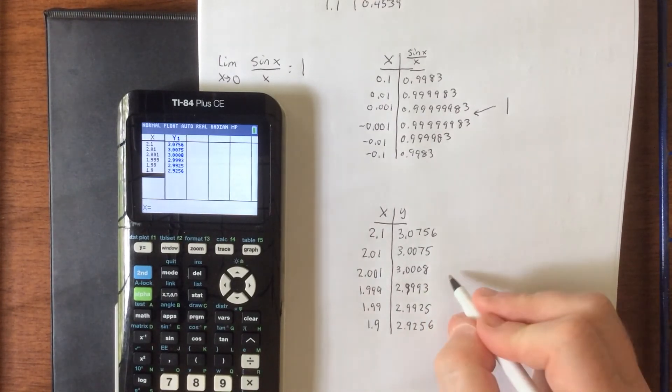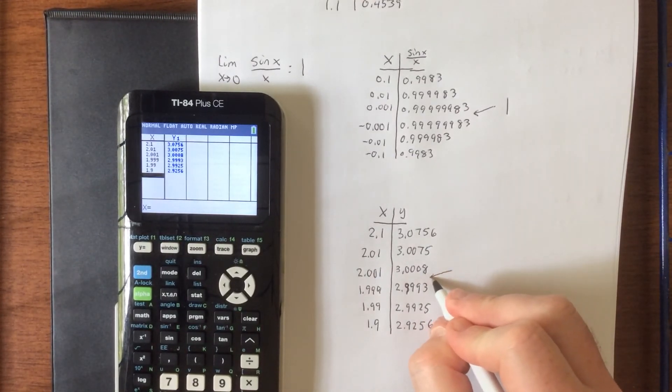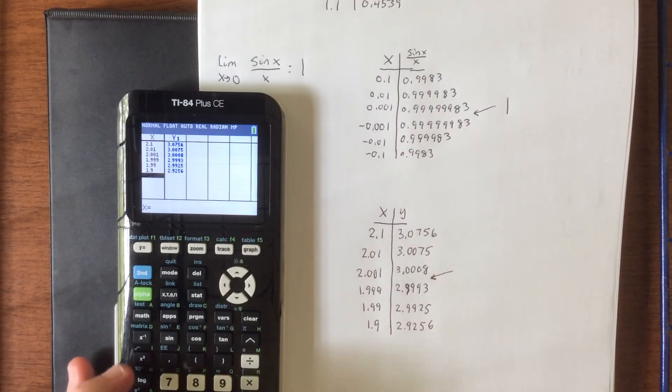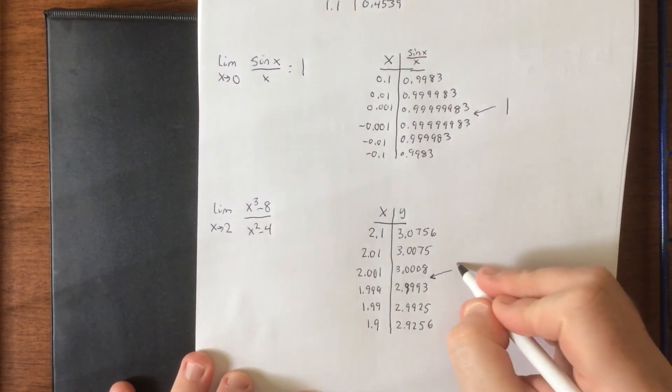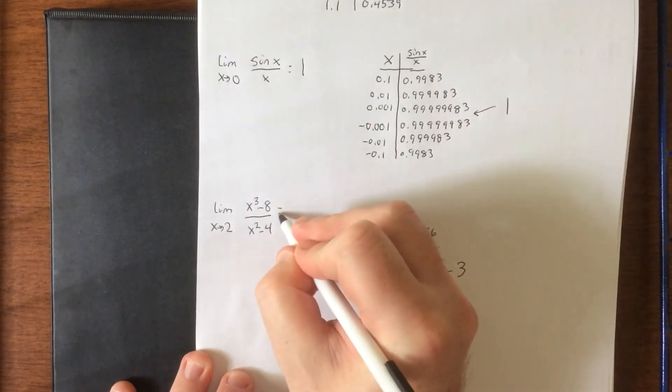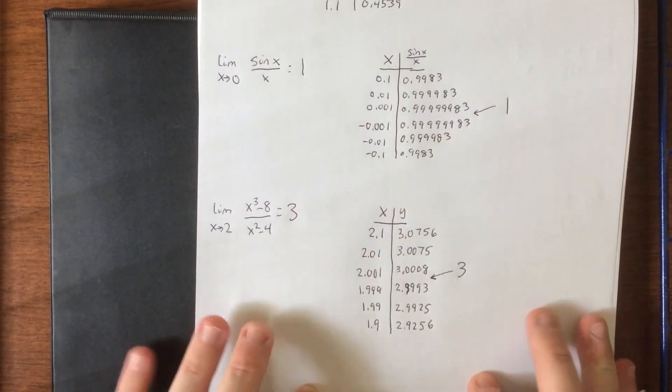So as x gets closer and closer to a value of 2, what does it appear as though our y value is getting closer and closer to? Well in this case, it looks like it's getting closer and closer to 3. So I would approximate this limit as being 3.